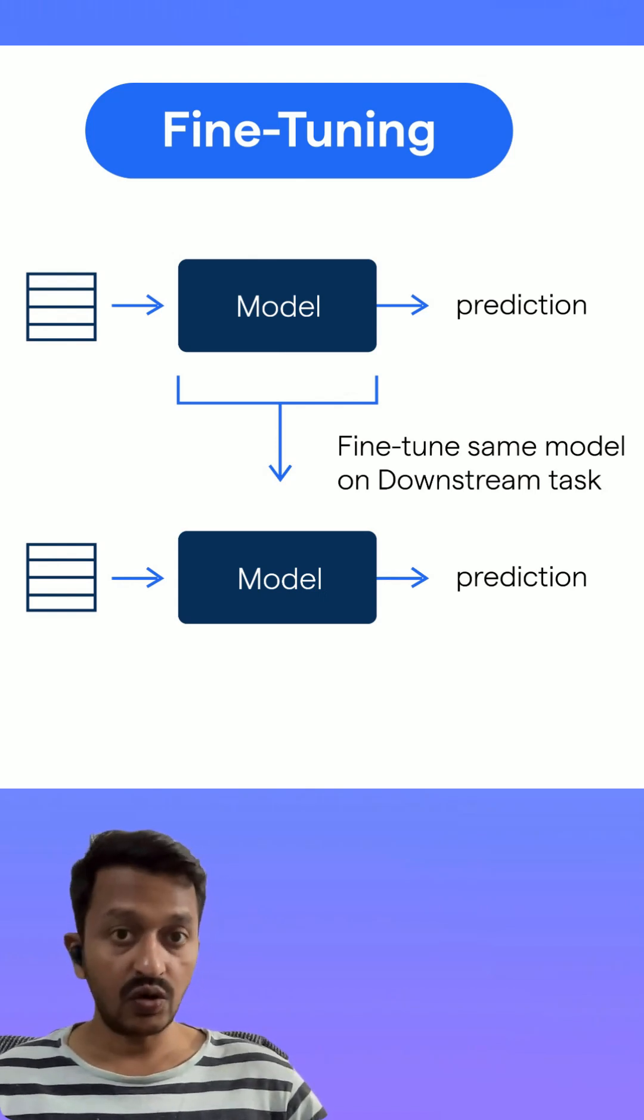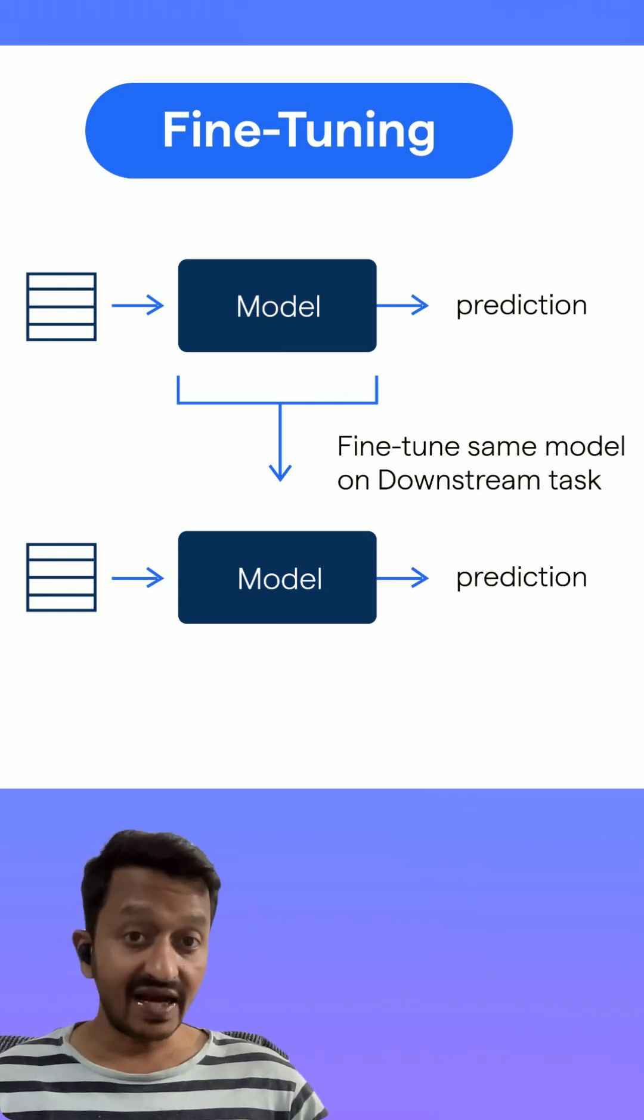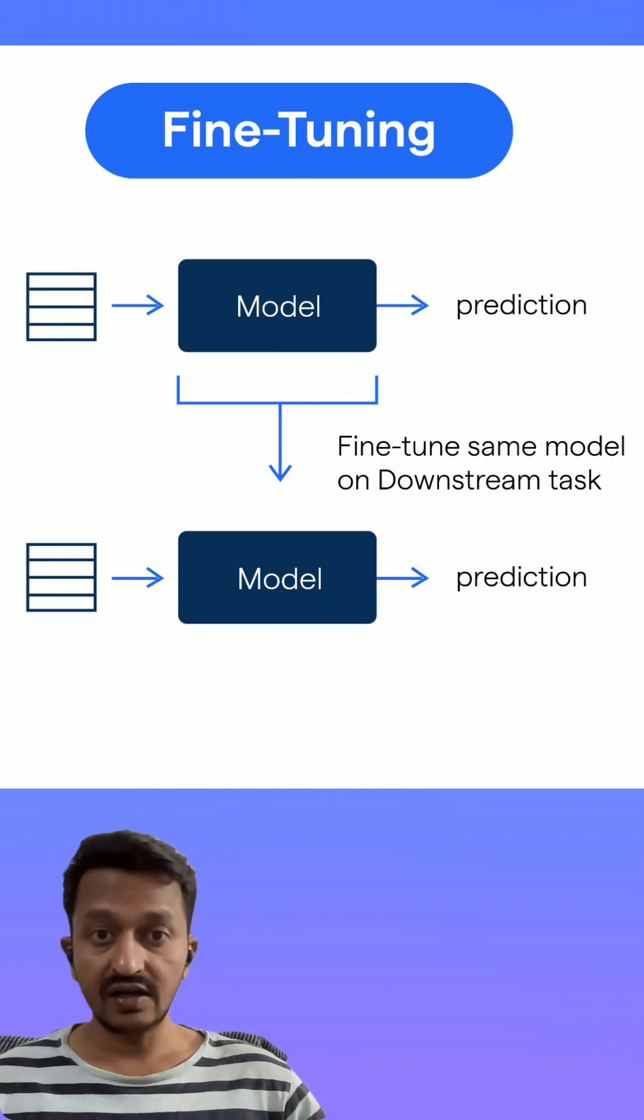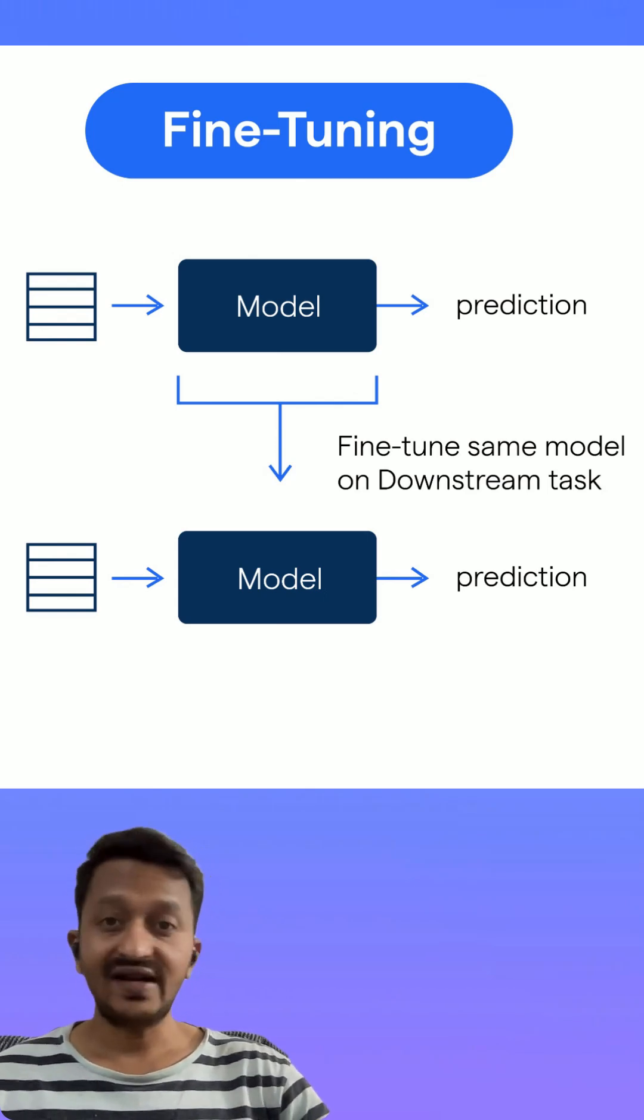Some real-world examples: ChatGPT for coding was fine-tuned on millions of code examples. Medical AI assistants are trained on medical literature. Customer service bots learn from thousands of support conversations. Financial AI studies market data and trading patterns.